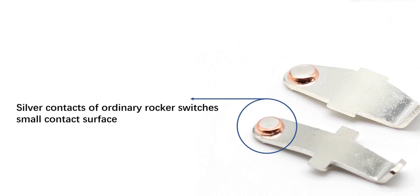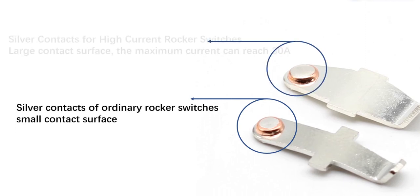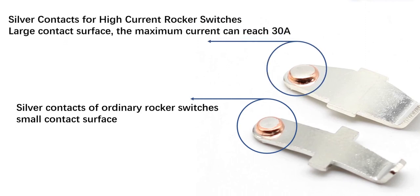The silver contacts on ordinary rocker switches have a small contact surface. In contrast, the silver contacts on high current rocker switches have a large contact surface, allowing the maximum current to reach 30A.